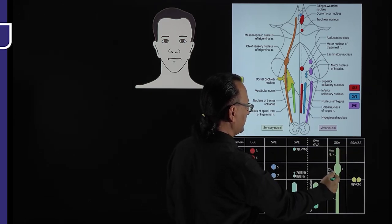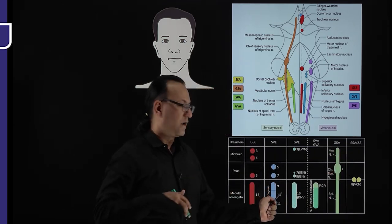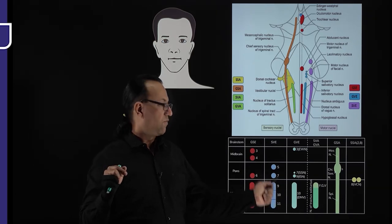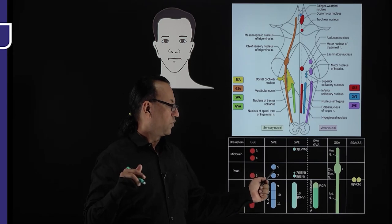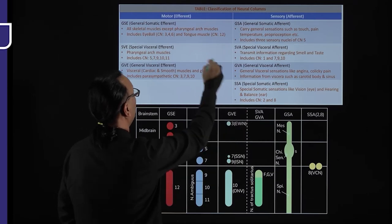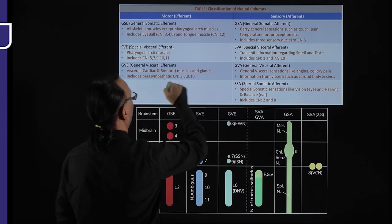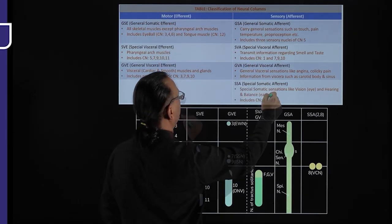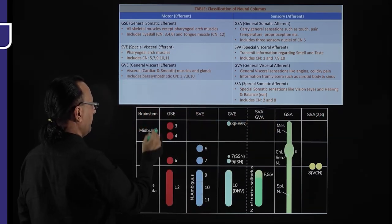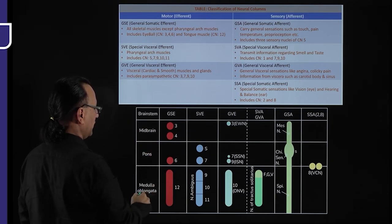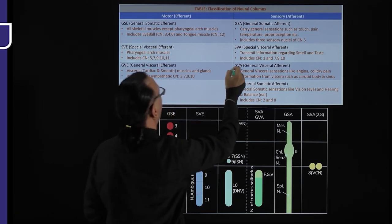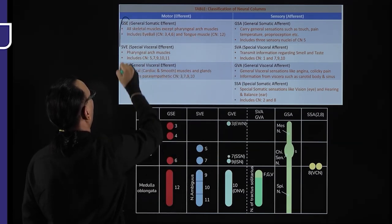We need to know the various combinations of nuclei and neural columns to handle related MCQs. For every E column there is a corresponding A column. GSE pairs with GSA, SVE with SVA, GVE with GVA. The SSA neural column is alone — there is no SSE. Now let us draw these tables and fill them with the motor columns first.